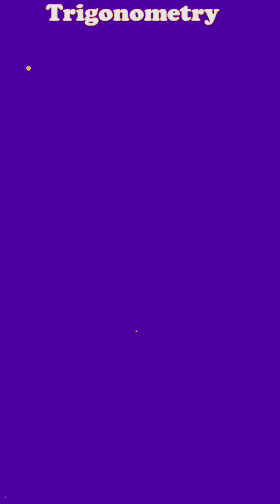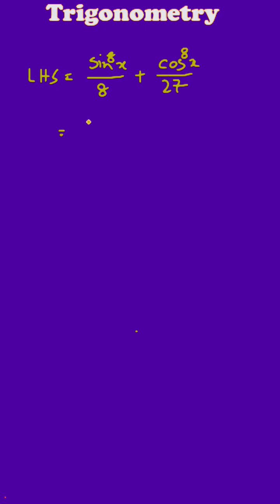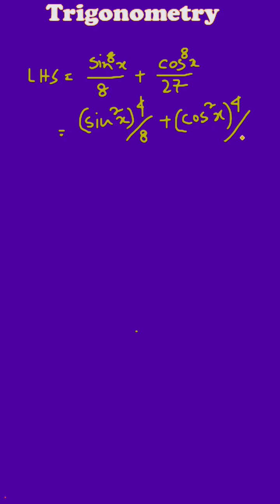Your left-hand side is sin⁸x/8 + cos⁸x/27. You can write this expression as (sin²x)⁴/8 + (cos²x)⁴/27. Now put the values of sin²x and cos²x.